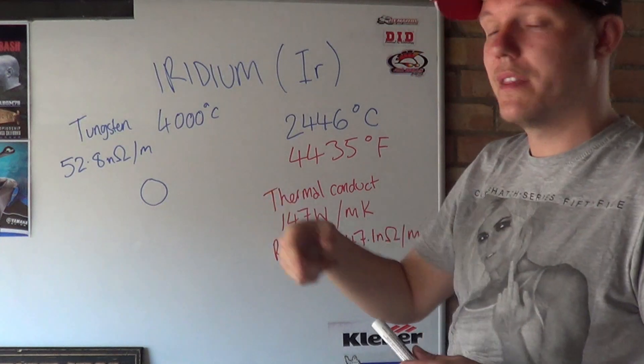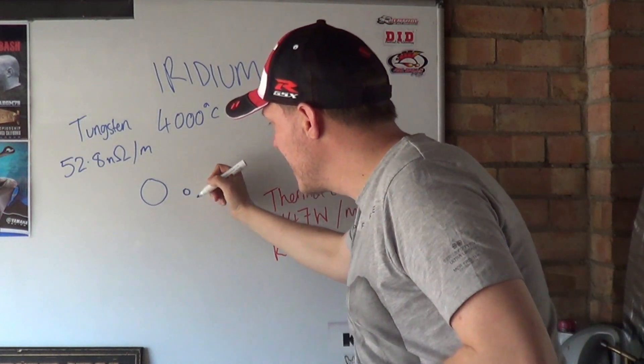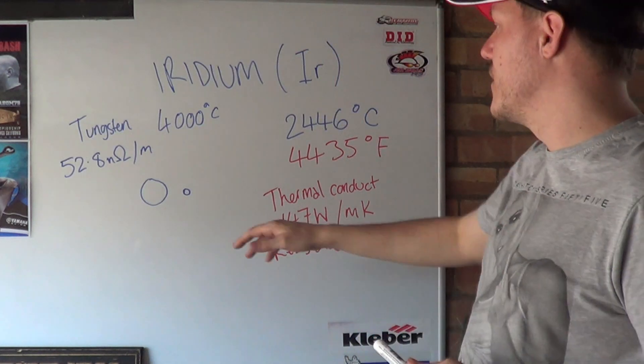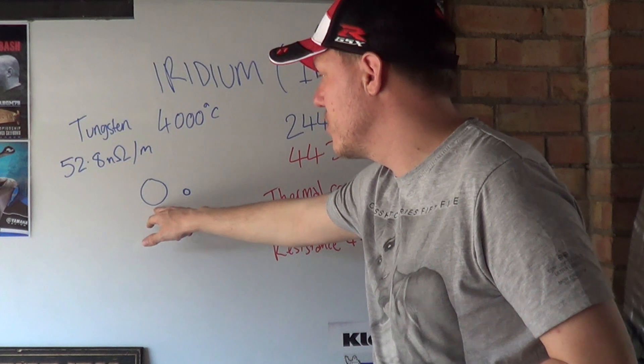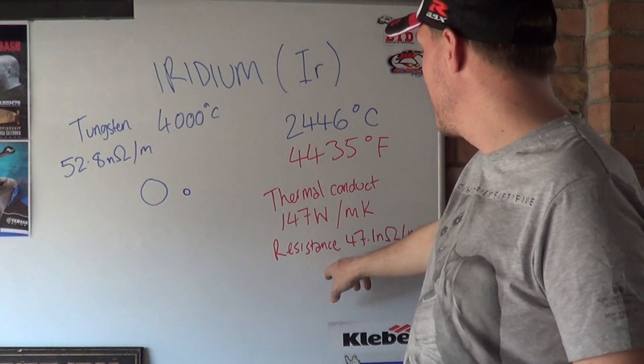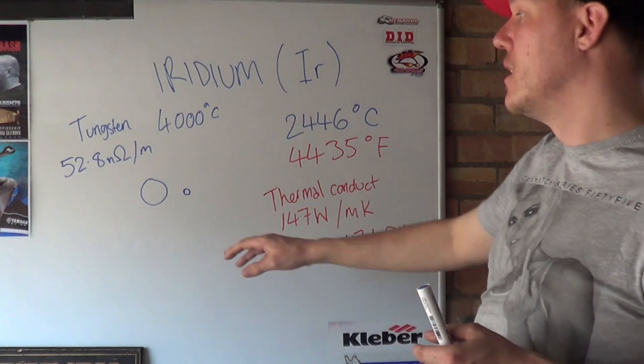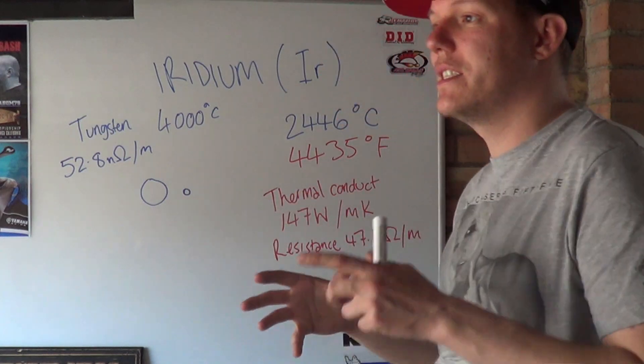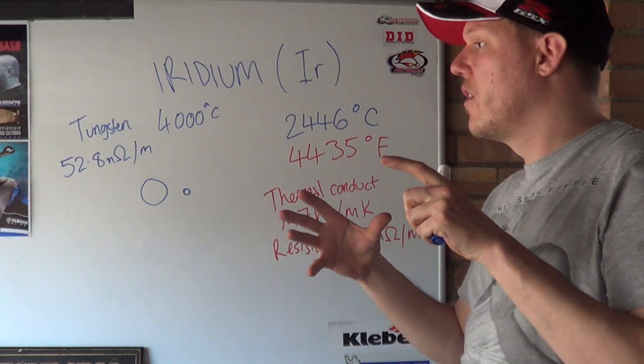Basically the pointy bit, the sticky bit where the spark comes from, your iridium can be a hell of a lot smaller. Obviously, like I've been talking about before with resistance, your cross-section is all to do with current and resistance. If you have a very low resistance, you can have a small electrode.